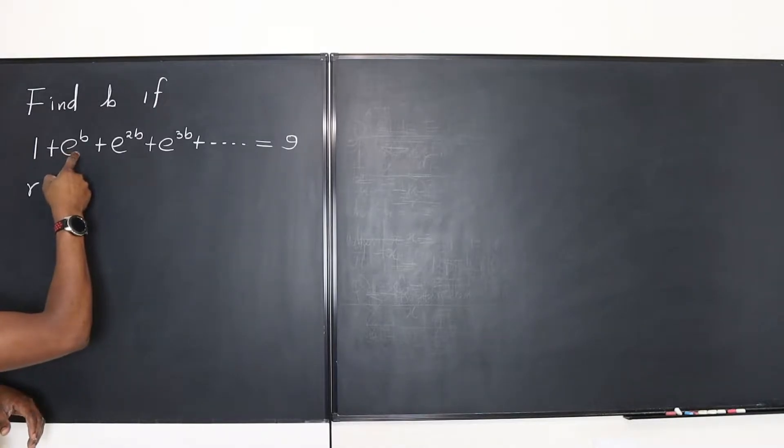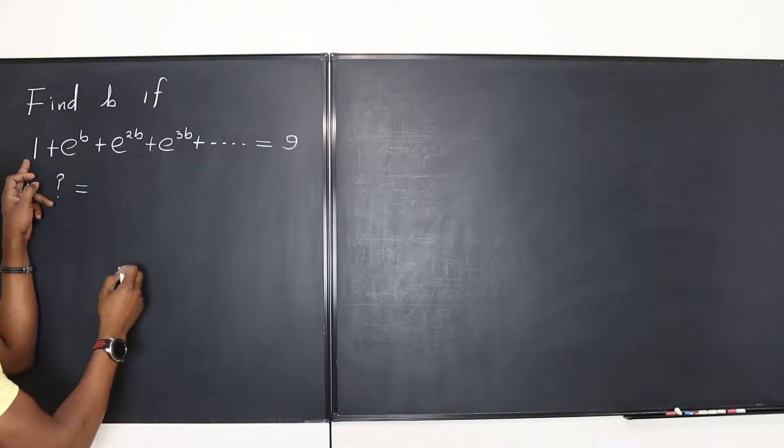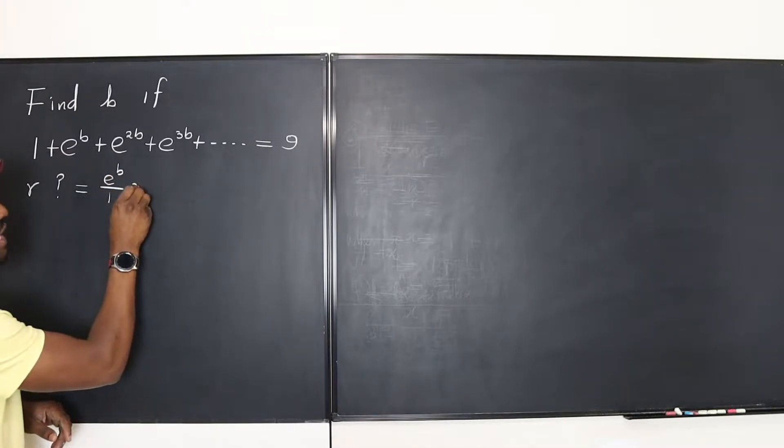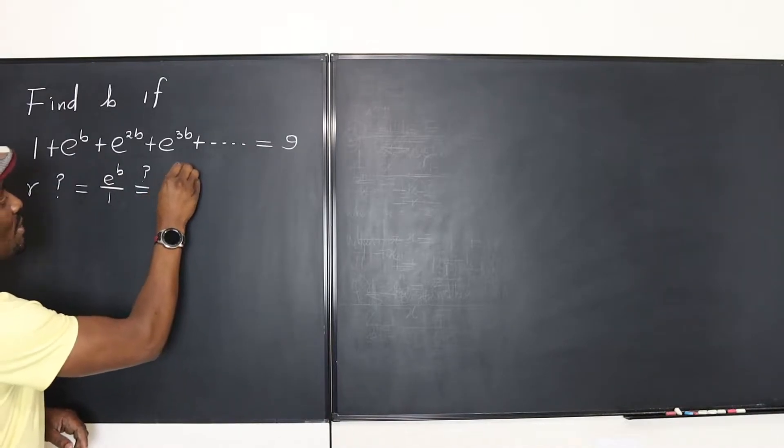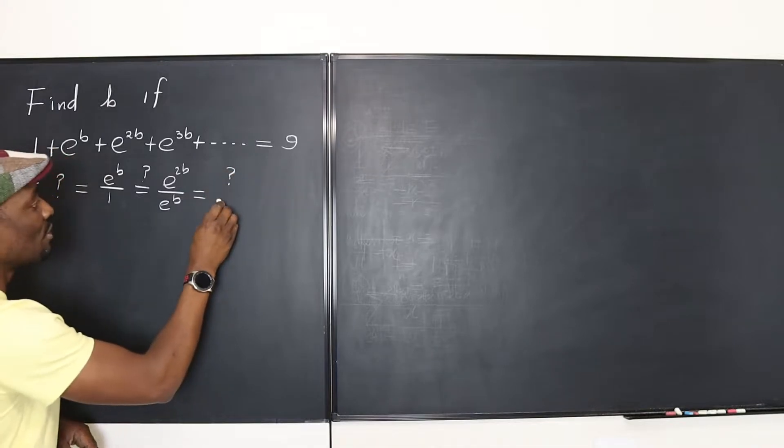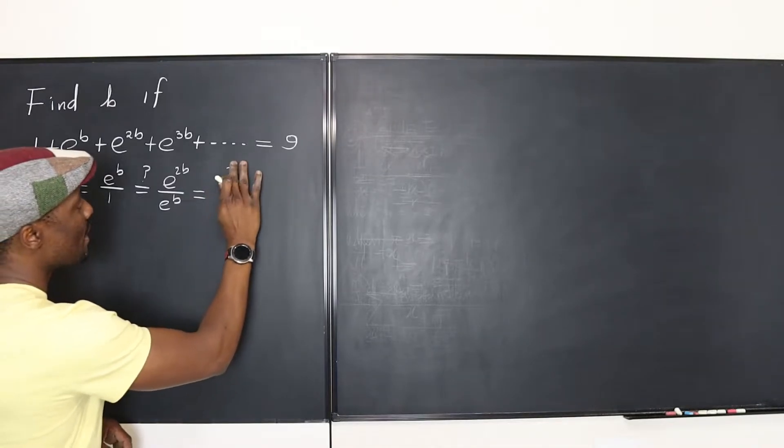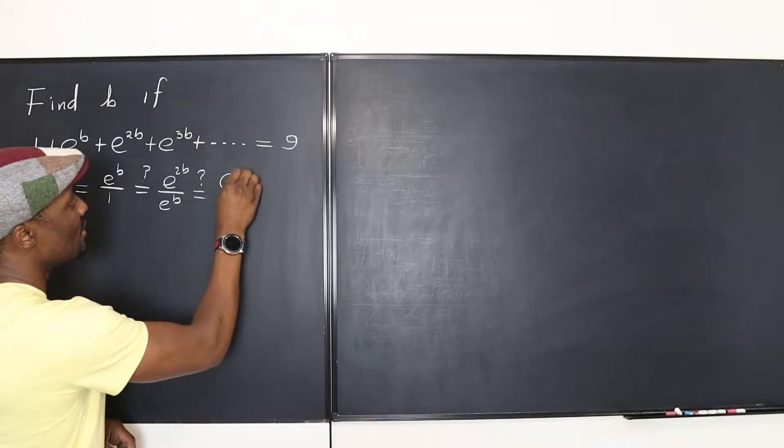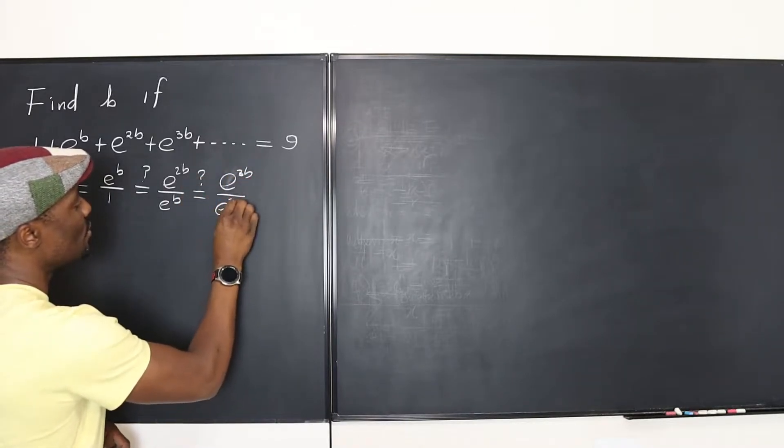And our R is going to be this term divided by the previous term. So it's going to be e to the b divided by one. Let's ask a question. Is it equal to e to the 2b divided by e to the b? Let's ask that same question. Is it equal to e to the 3b over e to the 2b?